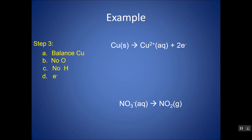Now let's do the NO3⁻ half reaction following the same steps. Balance everything other than oxygen and hydrogen first — one N on the left, one N on the right, already balanced. Next, balance oxygen using H2O. There are three oxygens on the left and two on the right, so add one H2O on the right. Write it as H2O liquid — not aqueous, because water mixed in water is still liquid water.